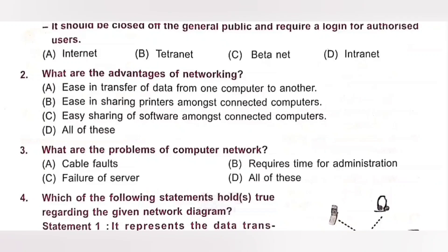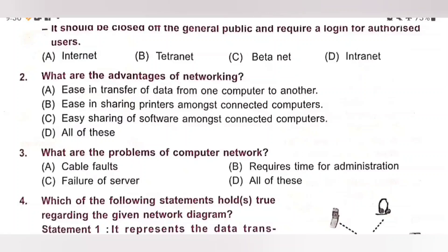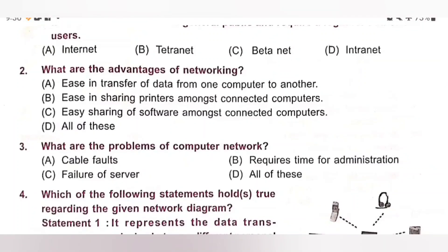Third one. What are the problems of computer network? A. Cable fault, B. Requires time for administration, C. Failure of server, D. All of these. If cable fault occurs in a network, data transmission among devices gets affected. Configuration of cables and server failure also obstruct data transfer. So all of them are problems in the network. Option D is the correct answer.